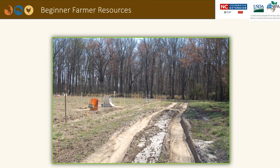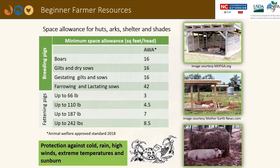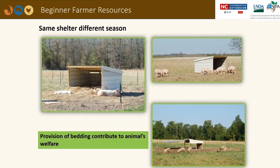Internal access roads can become channels for runoff. In sloped areas, you should always establish your roads along the contour of the slope. Shelters should also be properly sized. Here are some recommendations based on animal welfare approved standards of how many square feet per head for different classes of pigs. Shelter should provide protection against cold, rain, high winds, extreme temperatures, and sunburn. In the summertime, shelters can be designed so that the sides can be removed and additional shade can be provided with a tarp.